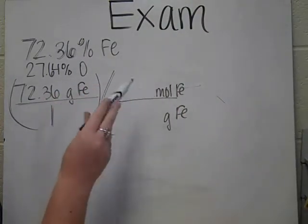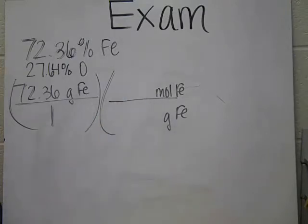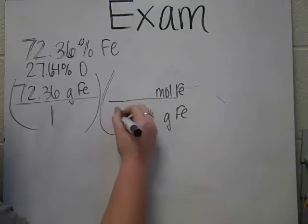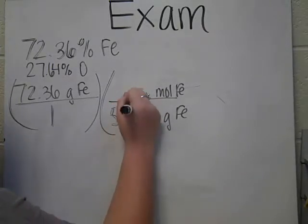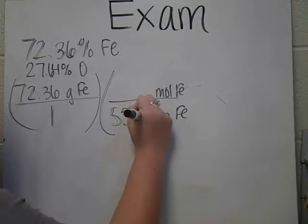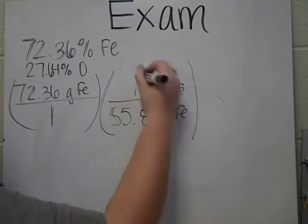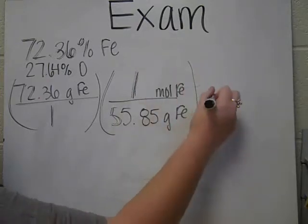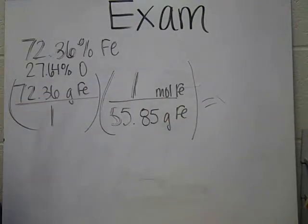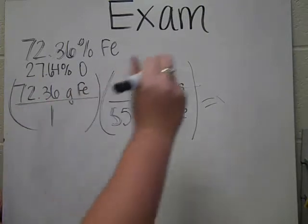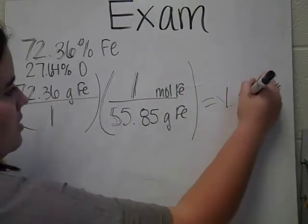In order to go from grams to moles, we have to find the grams on your periodic table. And you'll find that iron is 55.85, and that will equal one mole. Sorry, my marker's not doing so well. And then you'll figure out that that is 1.296 once you plug it in on your calculator.